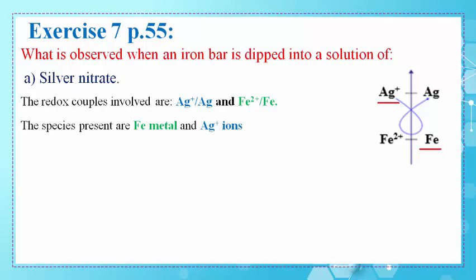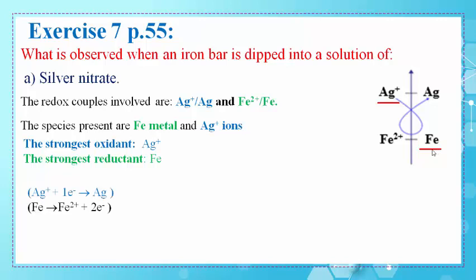The species present in this reaction are Fe metal, which is the iron bar, and Ag+ ions in the silver nitrate solution. As we can see on this axis, Ag+ is the strongest oxidizing agent, and Fe is the strongest reductant. According to the gamma rule, a reaction takes place between the strongest oxidant, Ag+, and the strongest reductant, Fe.